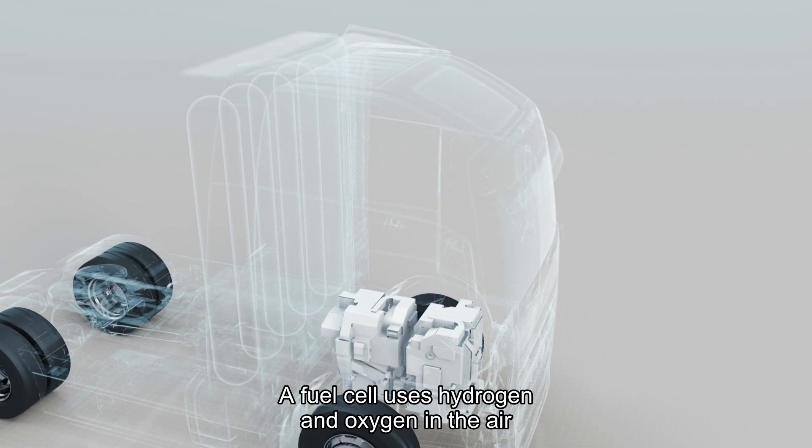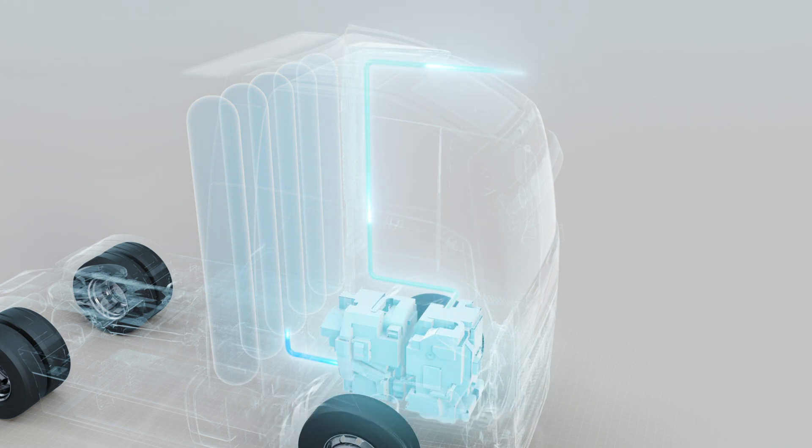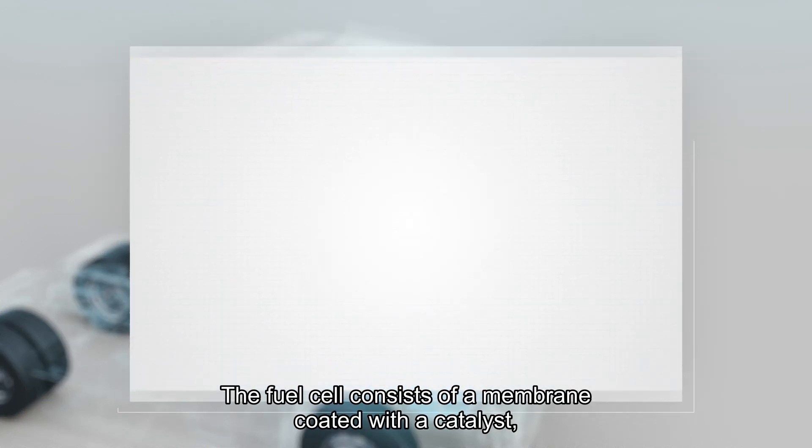A fuel cell uses hydrogen and oxygen in the air to produce electricity and water. The fuel cell consists of a membrane coated with a catalyst.